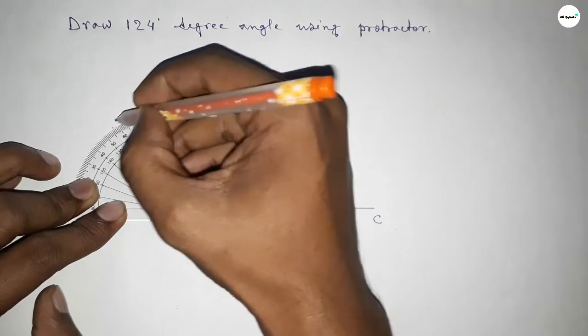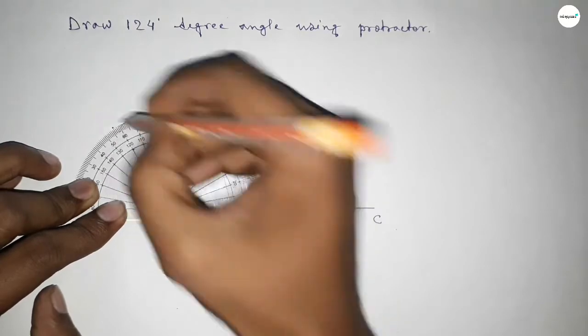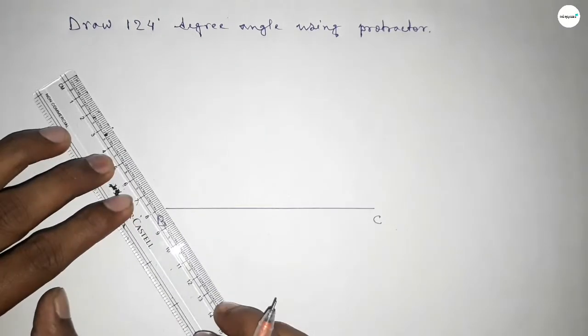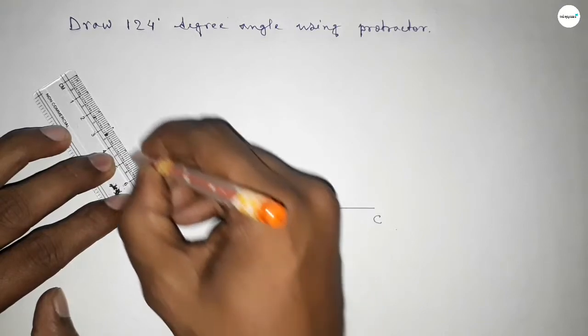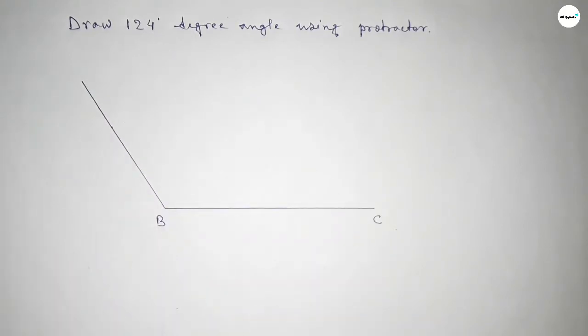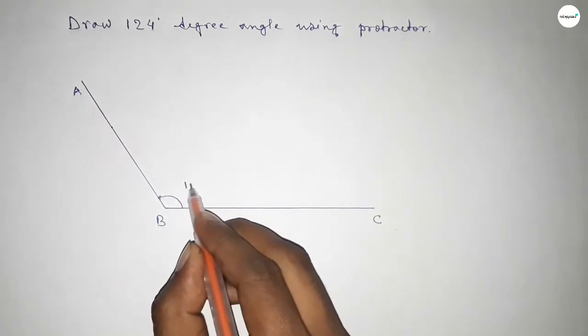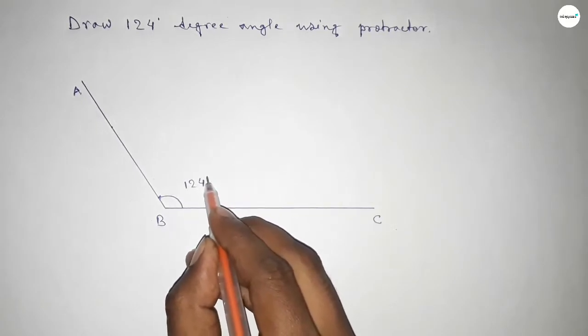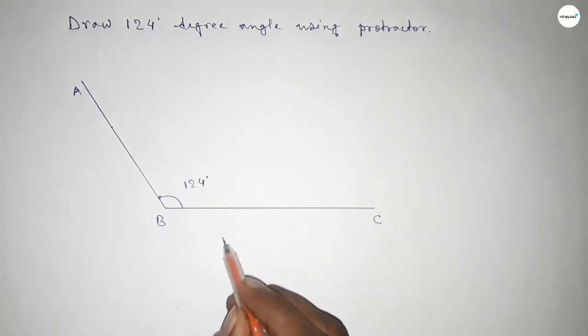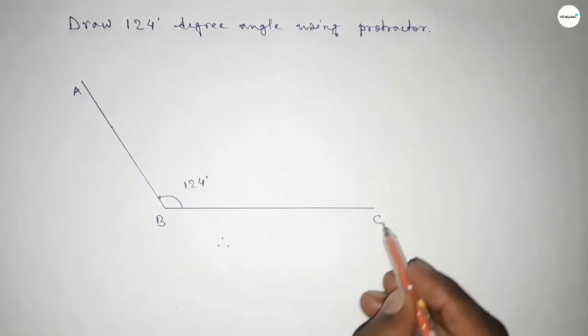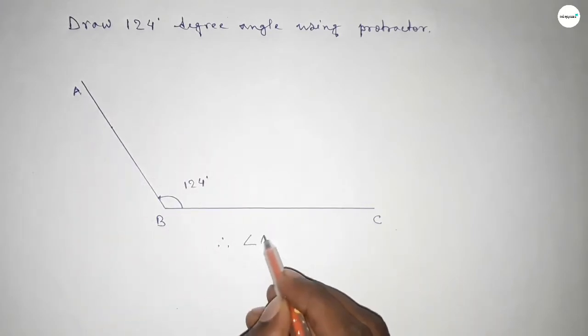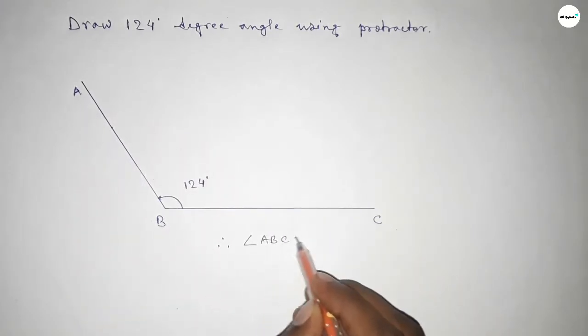So this is 124 degrees. Now joining this side to get 124 degree angle and taking here point A. So angle ABC, this is 124 degrees. Therefore, angle ABC equals 124 degrees.